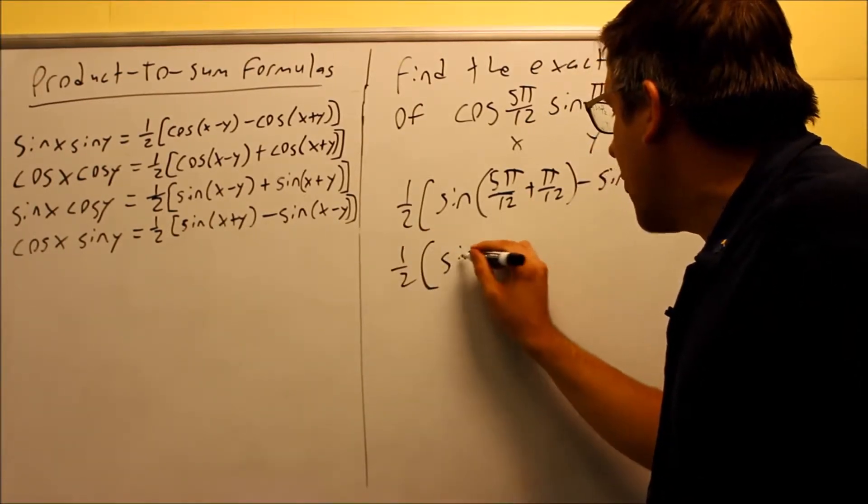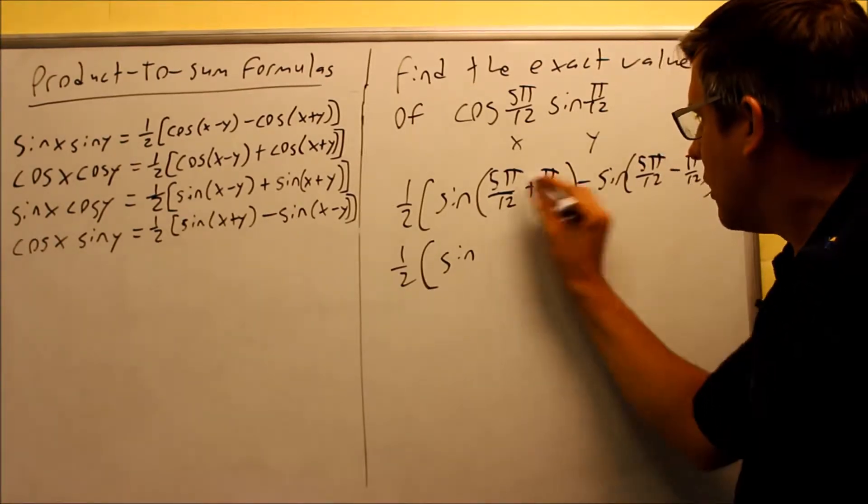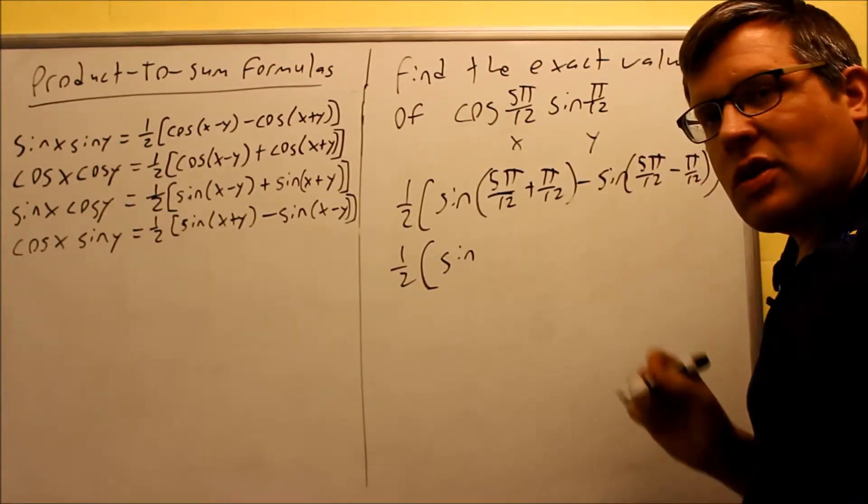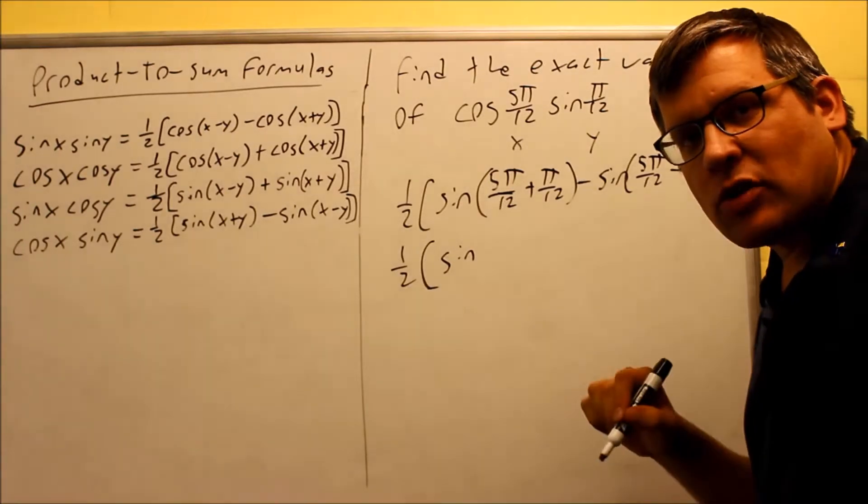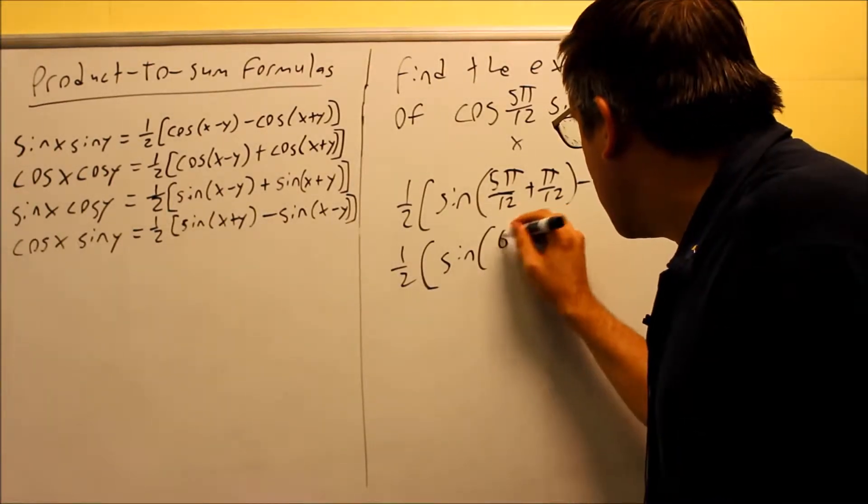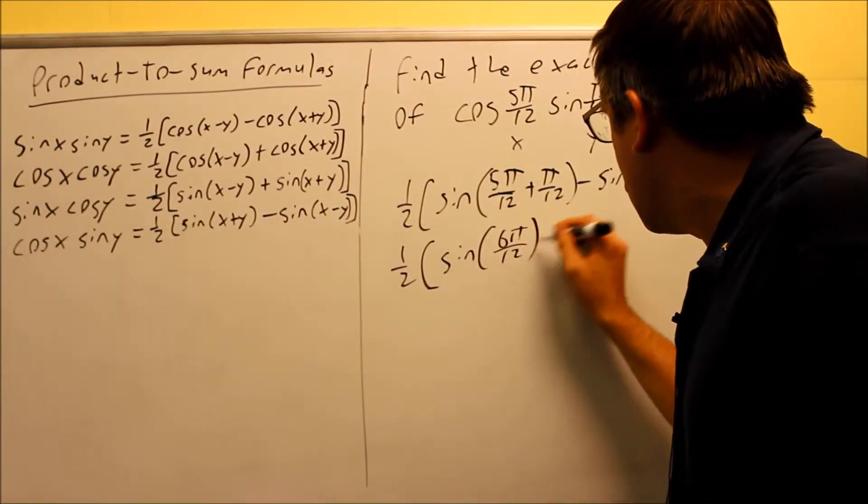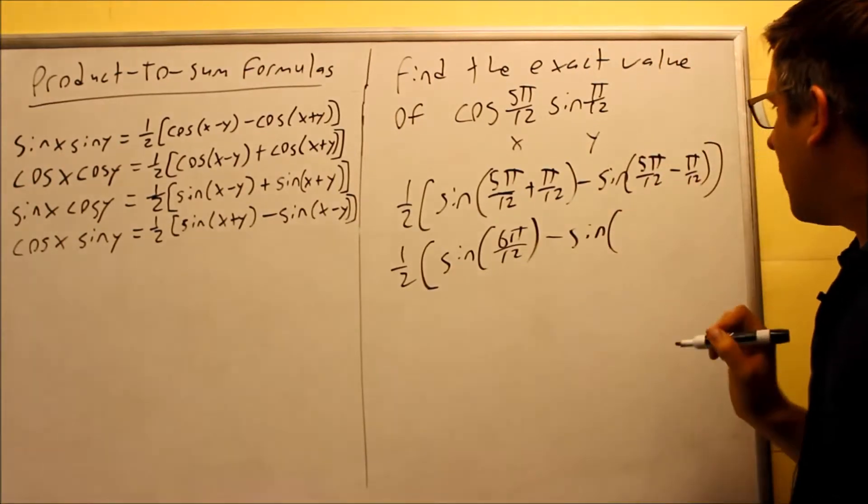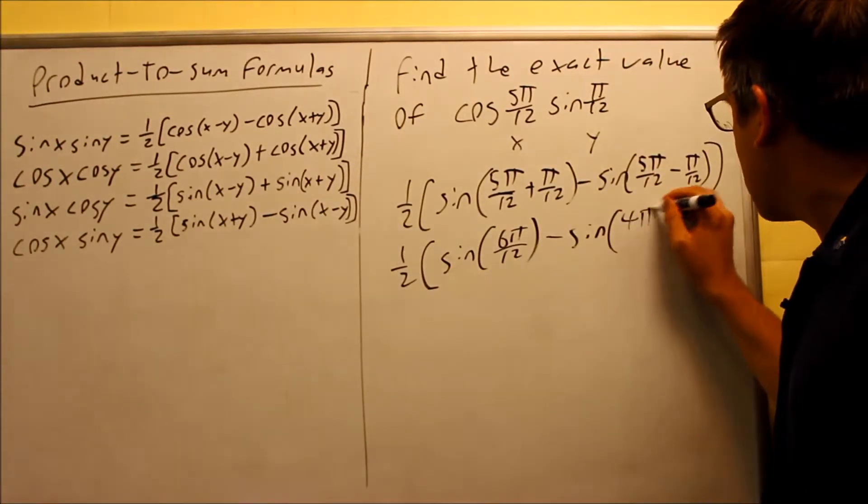So we have 1/2 times all this. When we add these together, we're going to get 6π/12, and we can reduce it later. And then next we're going to have sine 5π minus π over 12, that's 4π/12.